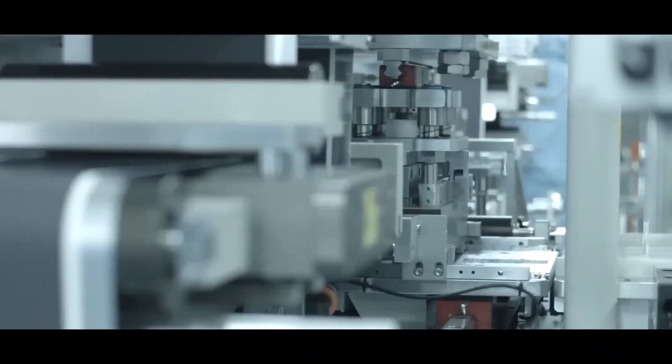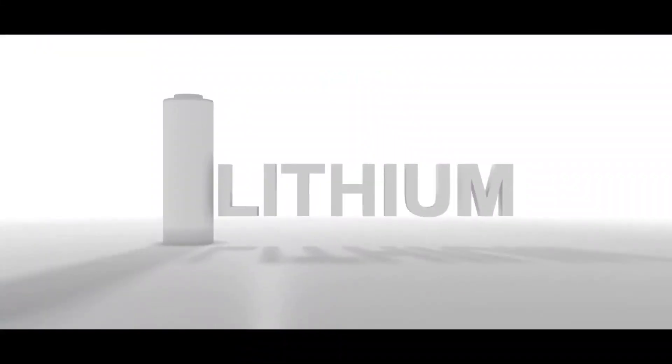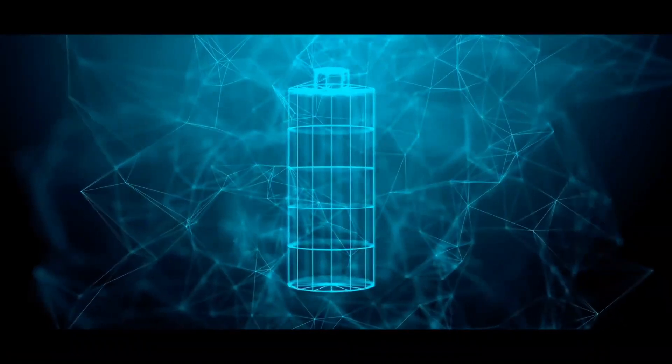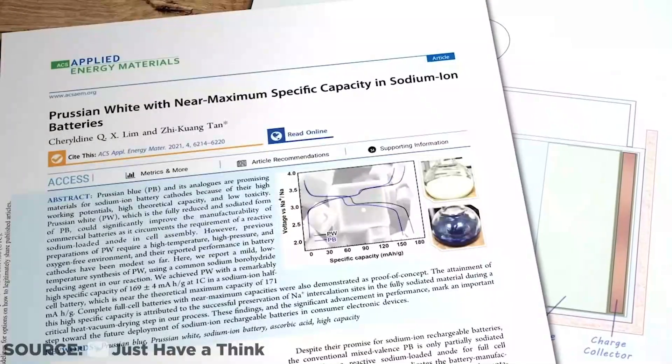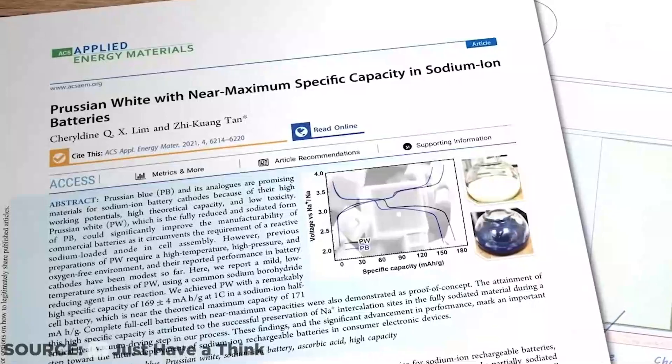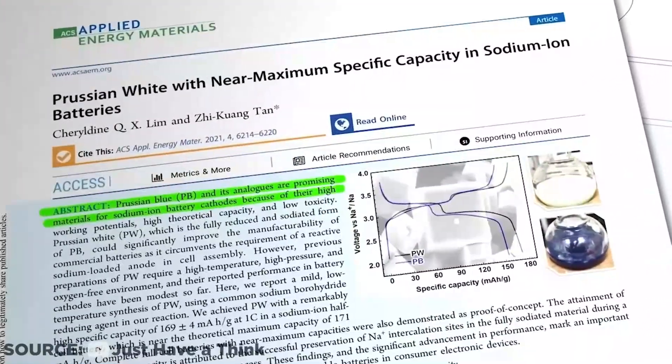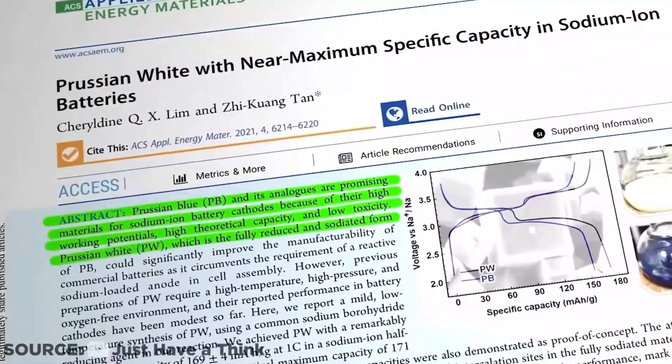The electrode materials used were the key distinguishing component in this more contemporary approach. Because Prussian white, a cathode material, is a completely reduced and sodiated version of Prussian blue with high working capacity, high theoretical capacity, and low toxicity, it may be used during cell construction instead of a reactive sodium-loaded anode, saving both time and money.